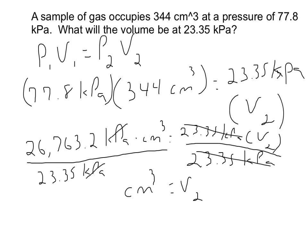26,763.2 divided by 23.35 gives me an answer of 1,146.2 centimeters cubed. And that right there represents my final answer, the second volume that I wanted to find. And that's all you've got to do to solve Boyle's Law.